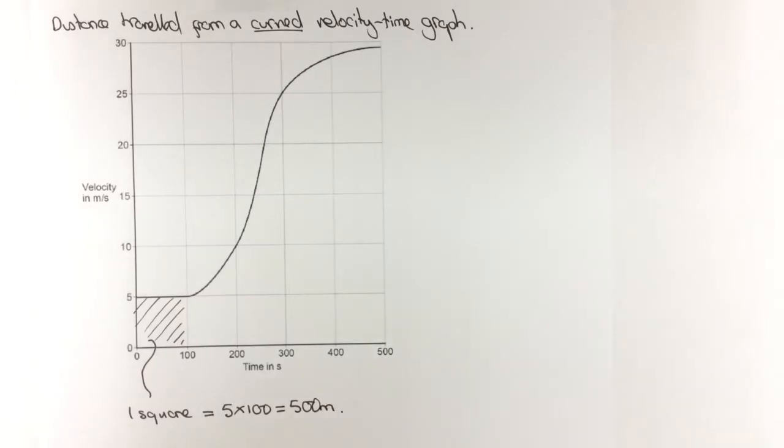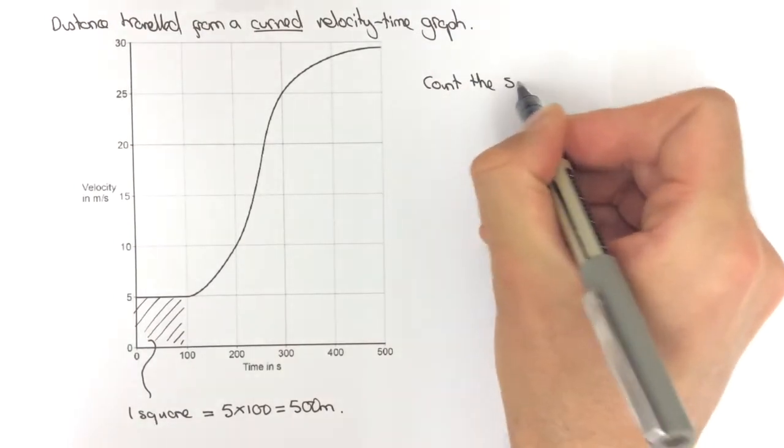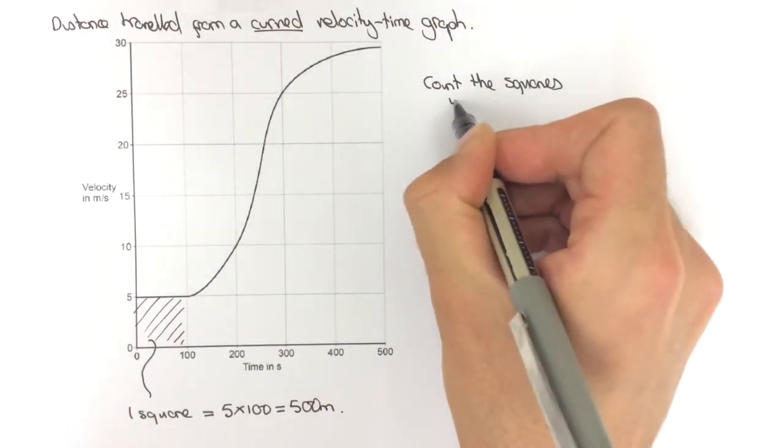So once we have found the value of one square, our next job is to count the squares under the graph.